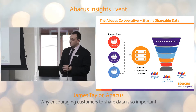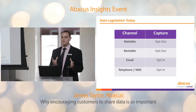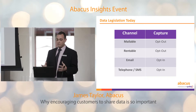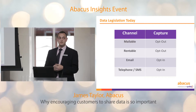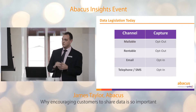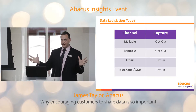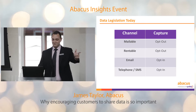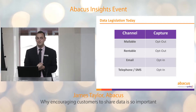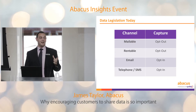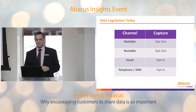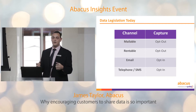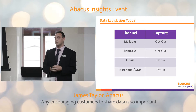There are different rules for different channels. For mailable — sending your customers postal mailings — the option is to opt out, as long as you give the customer the option to opt out. For rentable — sharing data with third parties — the option is also to opt out. For email, obviously having consent to email that customer, the option is to opt in, and the same is for telephone and SMS as well. Everything that you send us, we take as gospel, so if you're capturing it in the right way and giving customers the right options, you can send it to us and we can have it flagged as such.